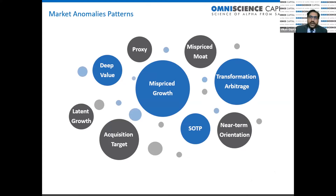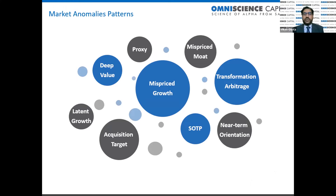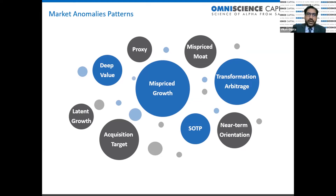When picking companies, there are multiple market anomaly patterns. The growth vector investing concept is the core pattern — mispriced growth is the main pattern. But there are others: deep value, mispriced moat, transformation arbitrage, acquisition target, and near-term orientation of Mr. Market. There are a number of those; I'll pick three case studies to illustrate specific anomalous patterns.